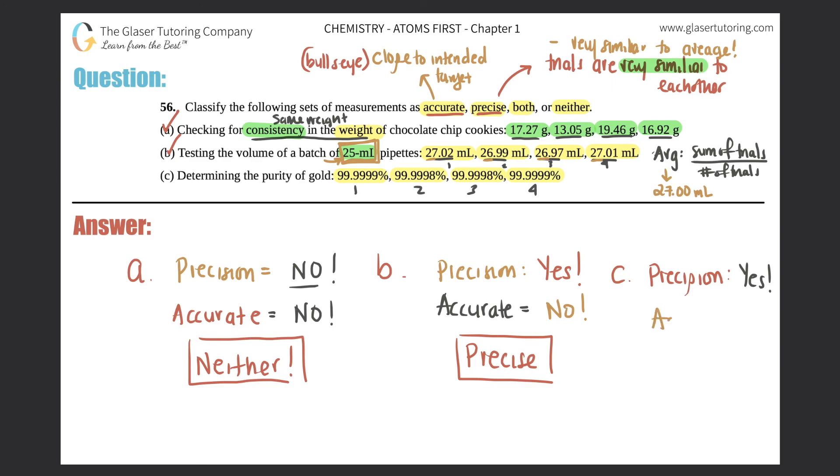Now, accuracy. Is this accurate? If they're looking for the purity of gold and there's four samples of gold, what do you think the intended purity of a gold sample is? 100%. That's the intended target.